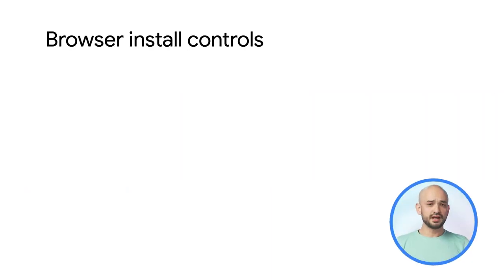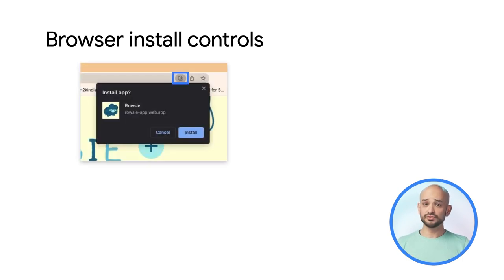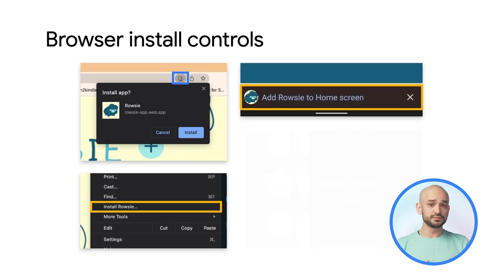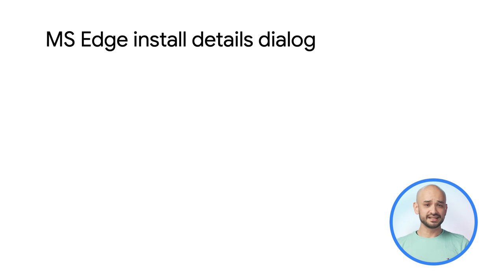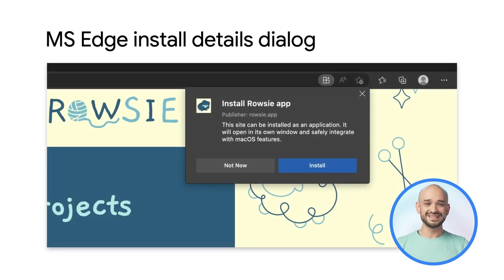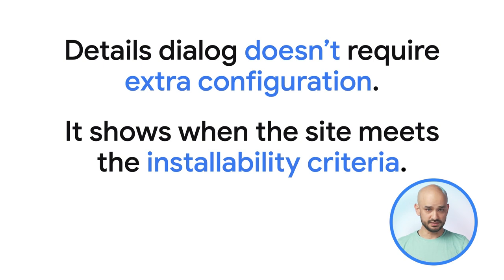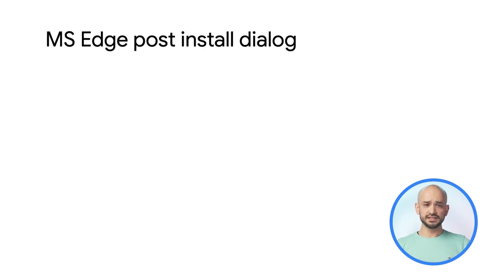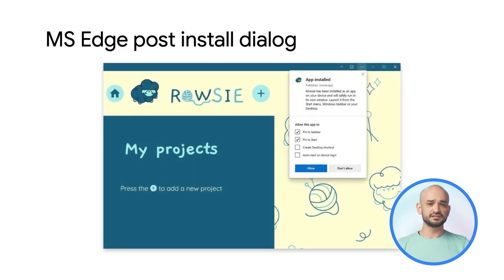Browsers that support installability have ways to let users know they can install and keep a web app on their devices. It can be a button on the browser UI, an entry on the menu, or a prompt with the install button. On Microsoft Edge, clicking on the install button will display the icon, name, and publisher for the app, and also let users know that once the app is installed, it will open in its own window and safely integrate with the operating system features. This happens automatically for PWAs that meet the install requirement without doing anything extra. When installation is complete, a post-install dialogue appears and explains that the app is ready, and allows users to quickly add the app to different OS surfaces and even run it when the user is logging in.